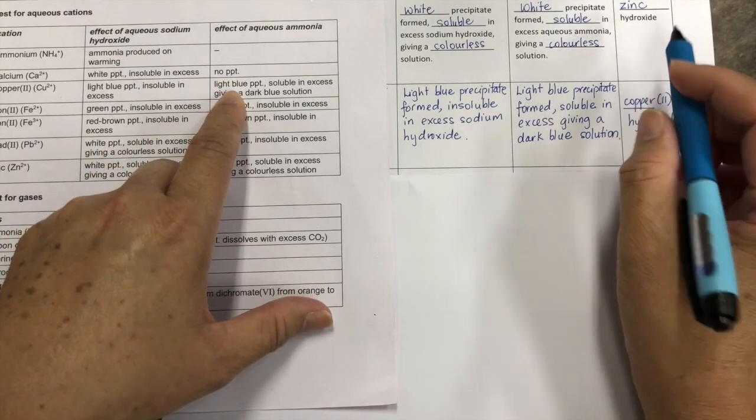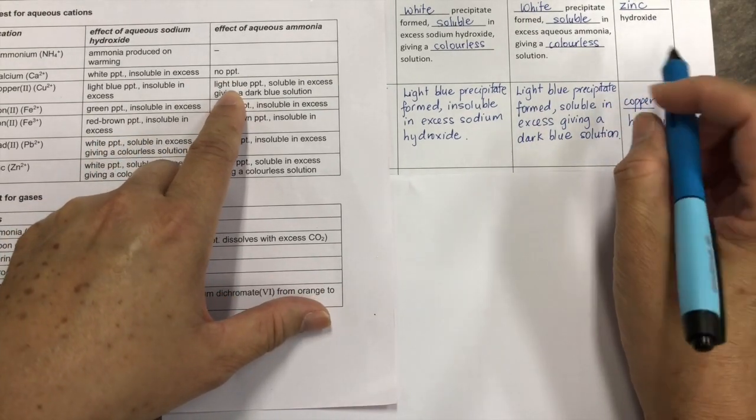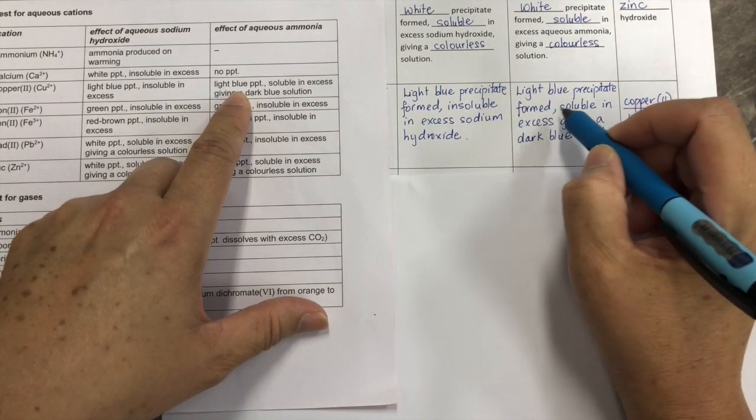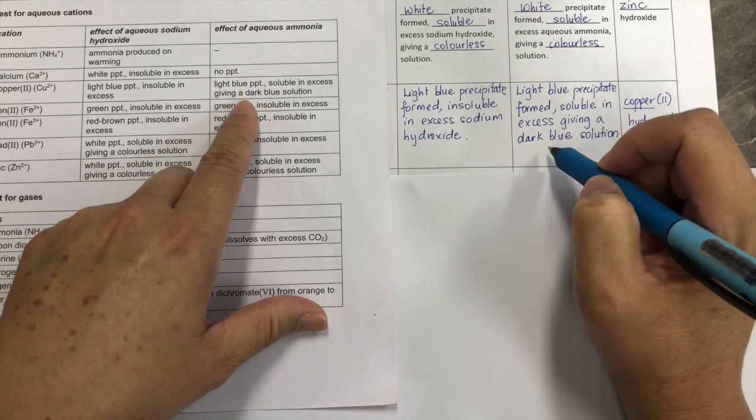As with the effect of aqueous ammonia with cation, you write down, light blue precipitate formed, soluble in excess, giving a dark blue solution.